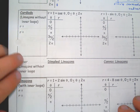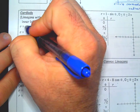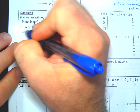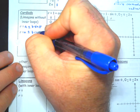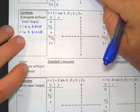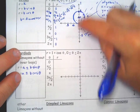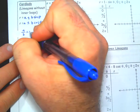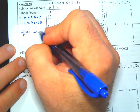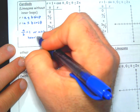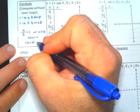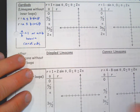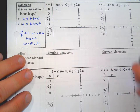These shapes here — anytime you have a number being added. It could be sine or cosine, just like with circles. If it involves sine, it's going to be vertical in nature. If it involves cosine, it's going to be horizontal. And if a over b equals 1 — if a equals b — then you're going to get these heart-looking shapes, which we call cardioids. Cardioids belong to a family of shapes called limaçons. These could be thought of as a limaçon without an inner loop, which will make sense when we get to the next shape.